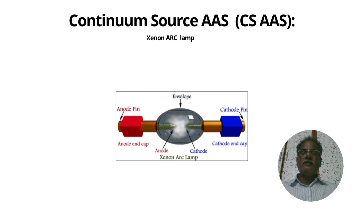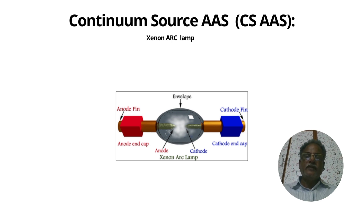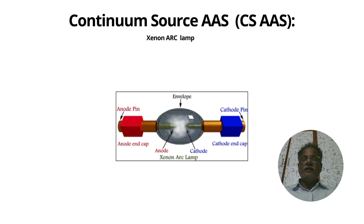Let us see the xenon arc lamps, which are used for continuum-source AAS. Here is the schematic representation of xenon arc lamps. The xenon gas is kept between the electrodes, and it gets excited and ionized. During de-excitation, it releases radiation.